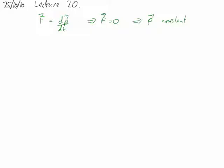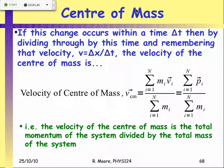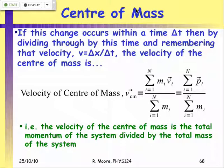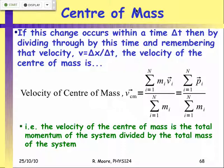This does not mean that the velocity of each individual mass in a system is constant — it just means the velocity of the center of mass of the system is constant. Interactions between masses inside the system are not external forces, but they will accelerate one mass or slow down another. So components of the system can change their velocity or momentum, but the overall system's center of mass velocity remains constant if total momentum is constant.